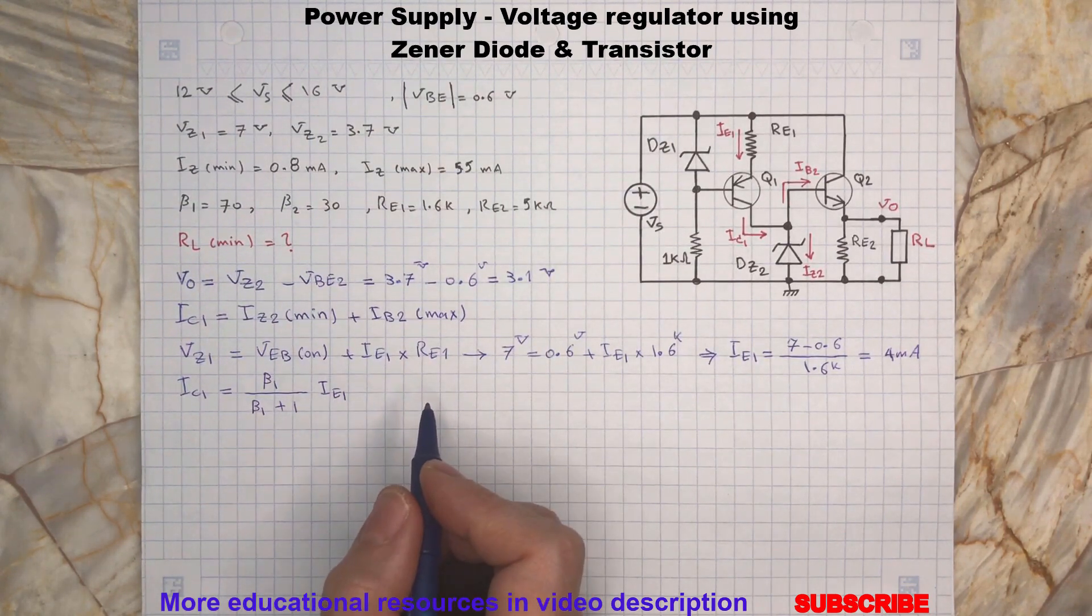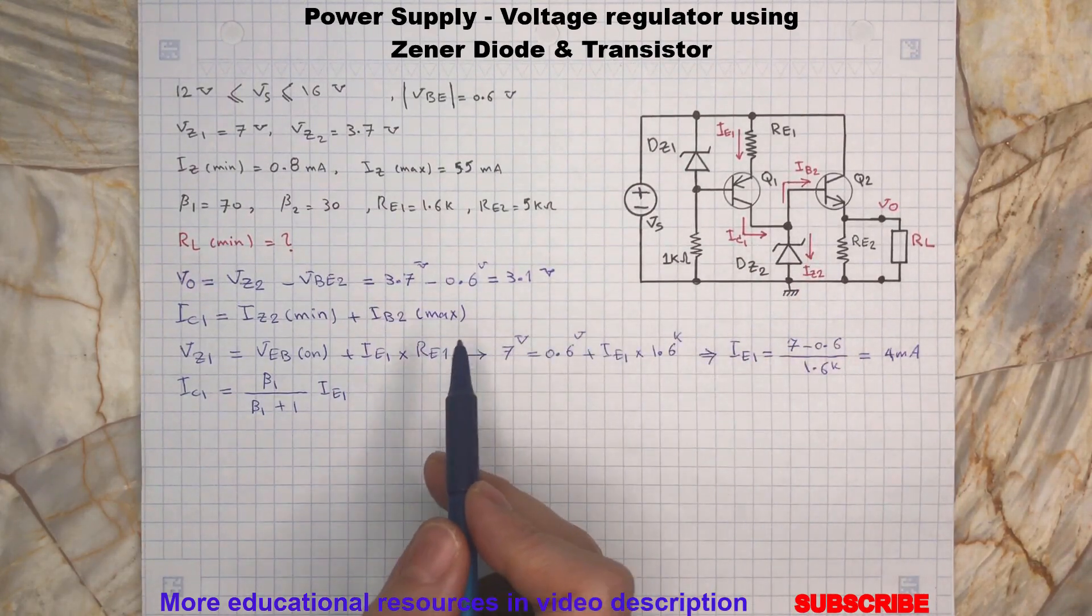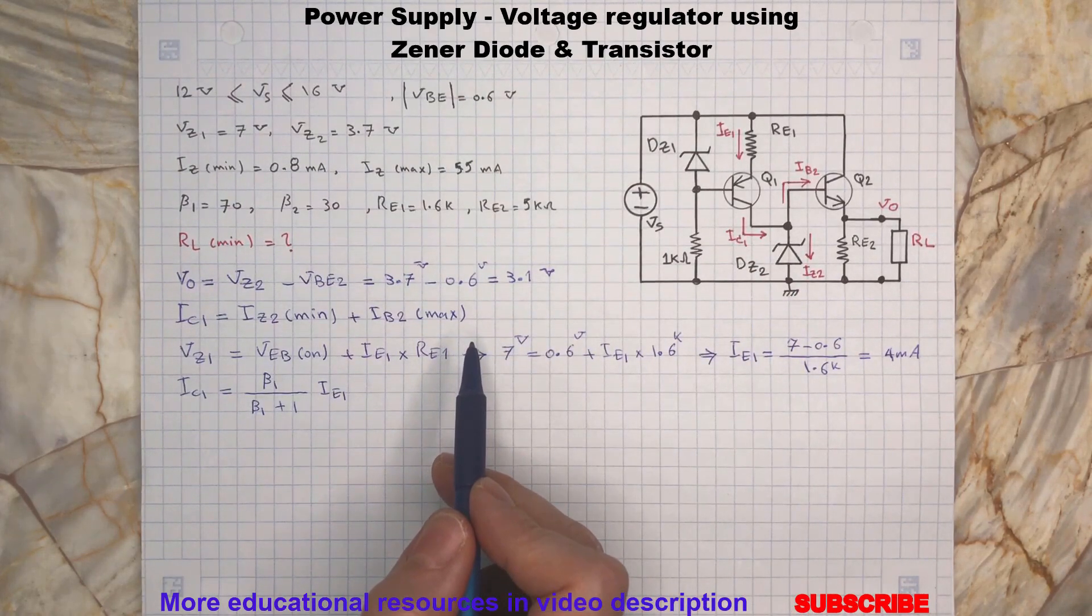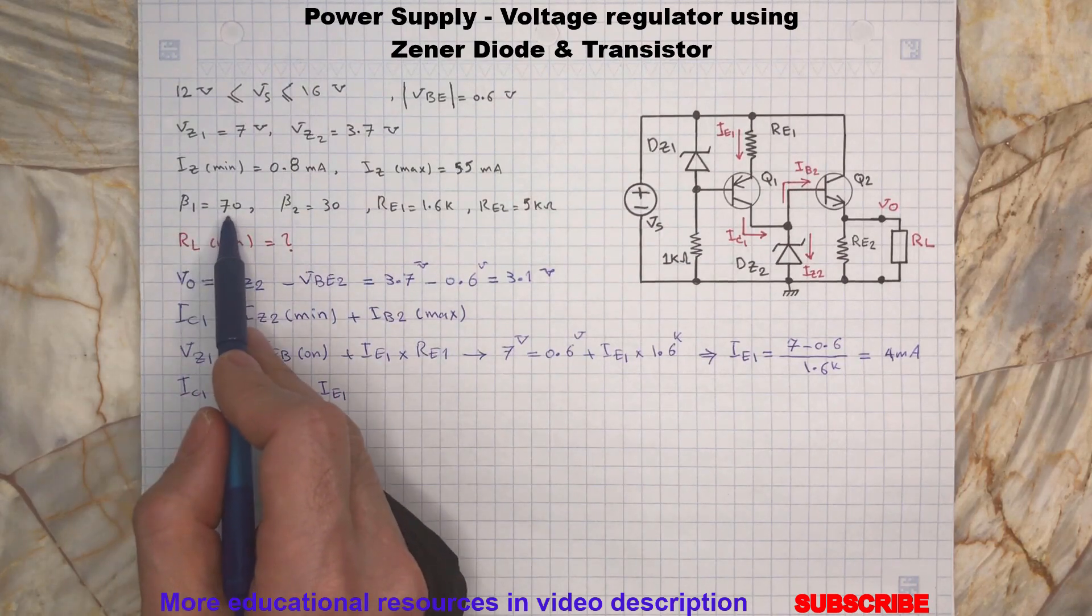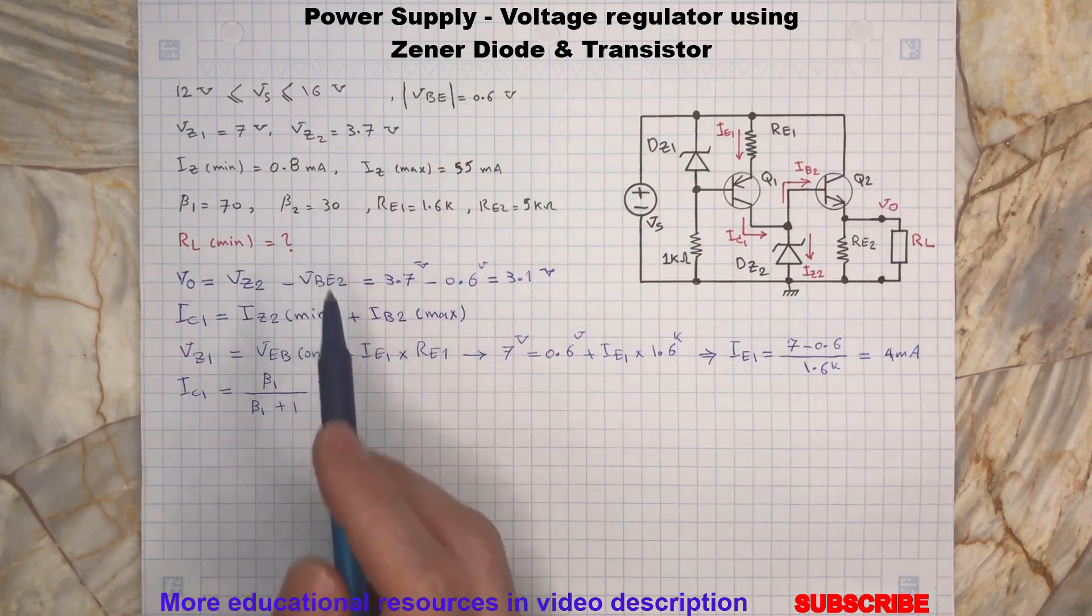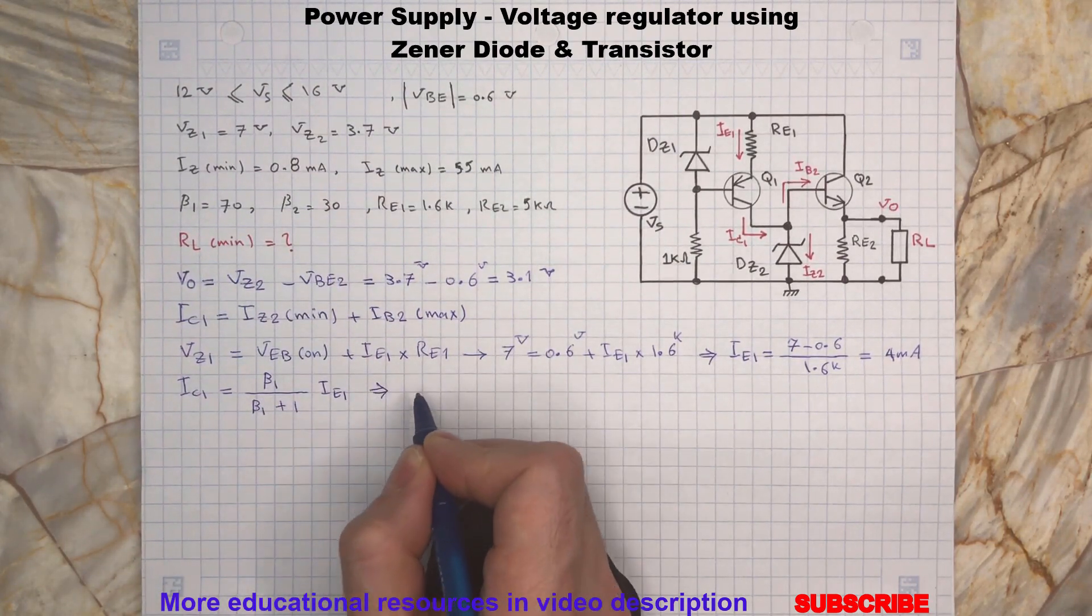Here in this example, these two transistors have a different value for their current gains beta. Beta 1 is 70 and beta 2 is 30. So IC1 will be...